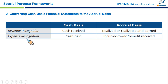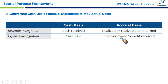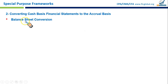For expense recognition: in cash basis, expenses are recorded only when cash is paid. In accrual basis, expenses are recorded when they are incurred or become due — even if nothing has yet been paid or the benefit has been received but money hasn't been paid. If expenses are incurred or owed, or a benefit has been received, you need to book the expense even if cash hasn't yet been paid.